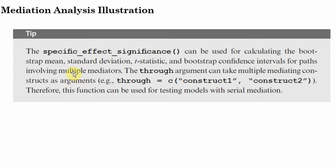Before going into that detail, let's look at the specific effect significance function — that is the function we use to retrieve the specific effects for each mediator. This can be used for calculating the bootstrap mean, standard deviation, t-statistics, and bootstrap confidence interval for paths involving multiple mediators. The 'through' argument can take multiple mediating constructs as arguments, and therefore this function can be used for testing models with serial mediation, which we will look into in our serial mediation video later.